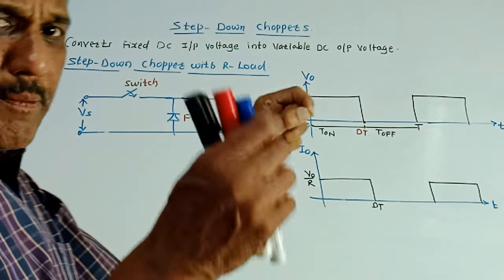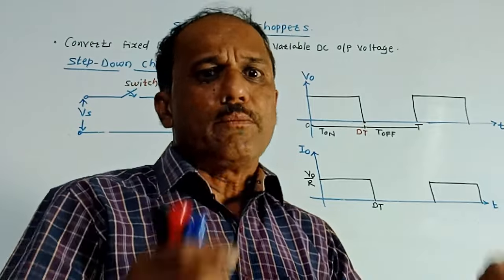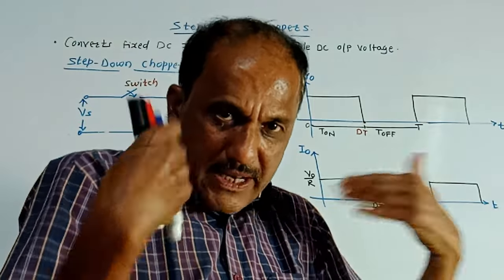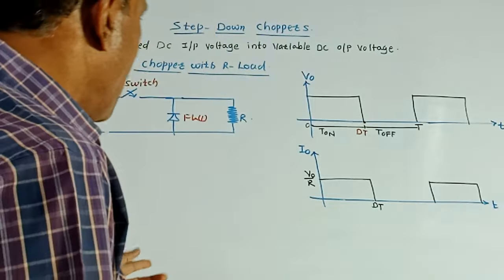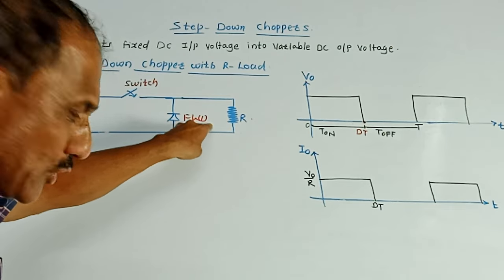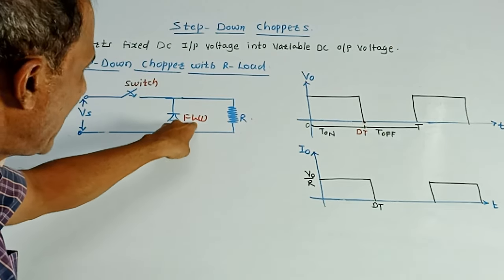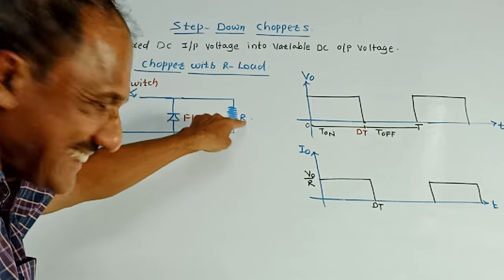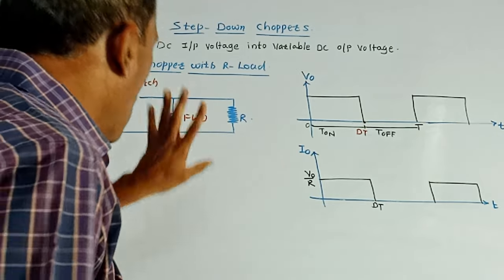Typically the voltage across the switch is around 0.5 volt, but it is a minimum, so we are neglecting for the further calculations. FWD is freewheeling diode which is connected in parallel with this R. R is the resistive load.